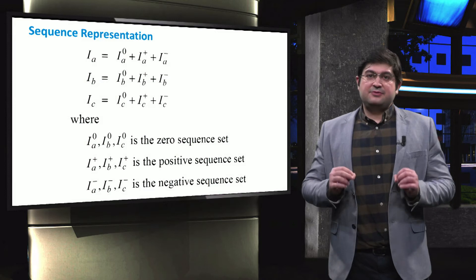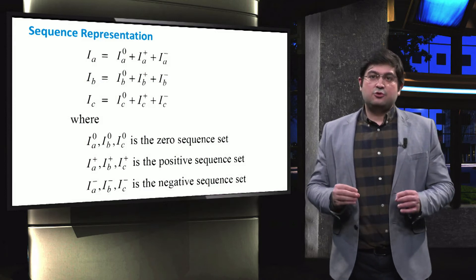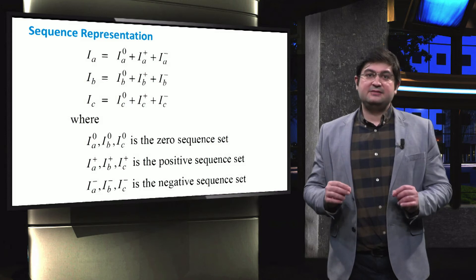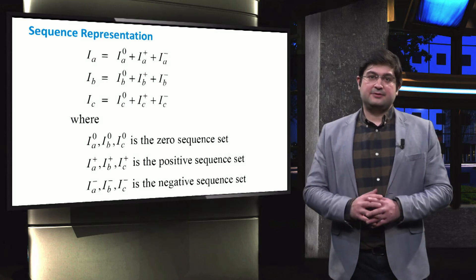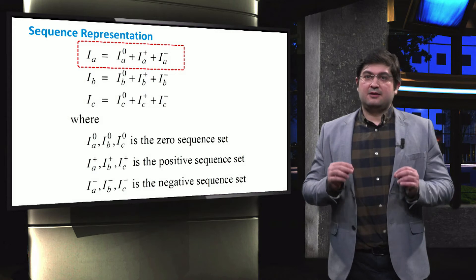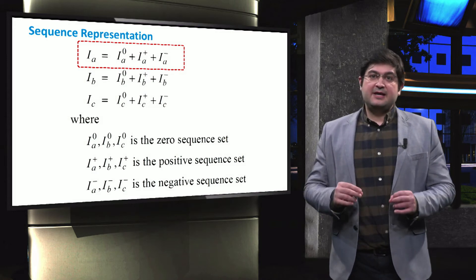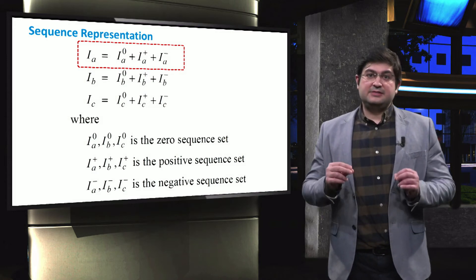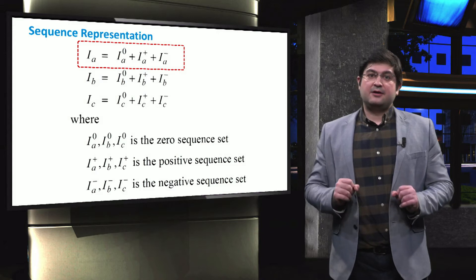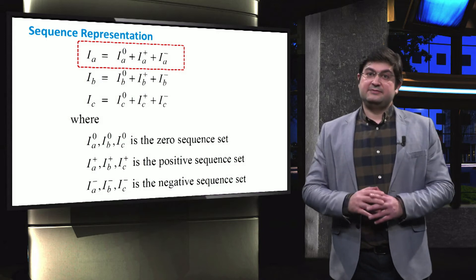If these three sequences are known, then it is possible to obtain the actual three-phase values as shown in the figure. The current of each line, like line A, is obtained by the sum of the current of the zero sequence, the current of the positive sequence, and the current of the negative sequence.